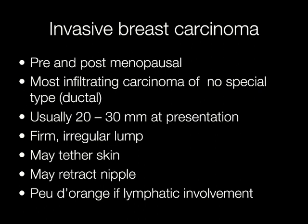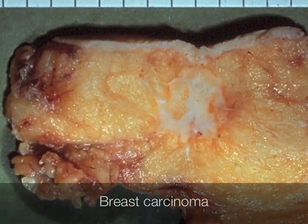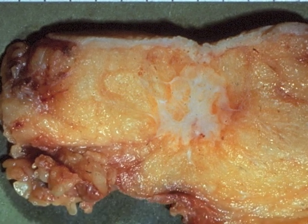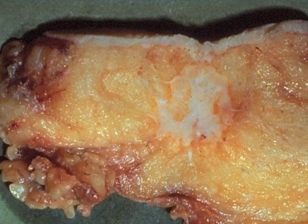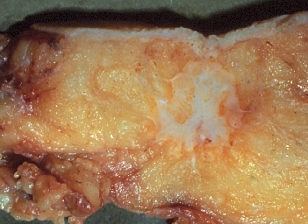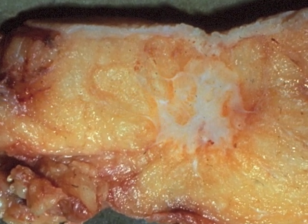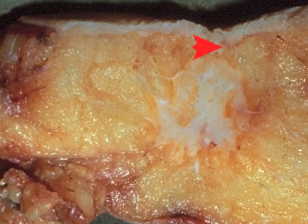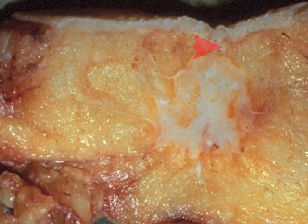If tumour is present in the lymphatics causing them to become blocked, this can cause the skin of the breast to resemble the skin of an orange, known as peau d'orange. This irregular rather spiculated white mass is an example of an infiltrating carcinoma of the breast. This carcinoma has become tethered to the skin causing it to become dimpled.